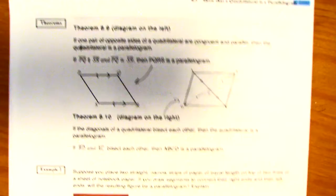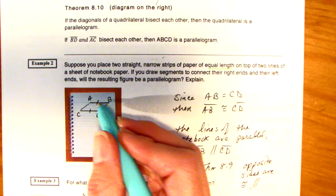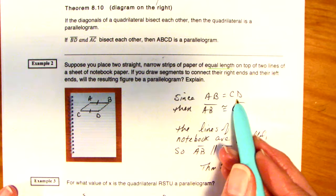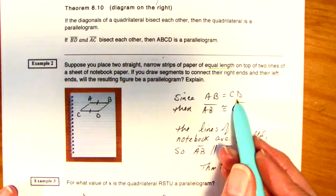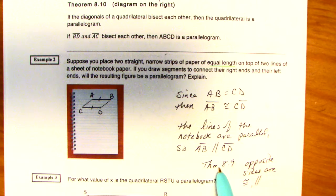So, let's look at this. Suppose you place two straight, narrow strips of paper of equal length on top of two lines of sheet of paper. So, AB and CD. They are of equal length. So that's why I marked it right here. Explain, when you connect these two lines, explain why this is a parallelogram. Well, since AB is equal to CD, we know they're congruent. The lines of the notebook are also parallel. So, AB is parallel to CD. And that's theorem 8.9, which we just did up here. You have one set, congruent and parallel. You have a parallelogram.